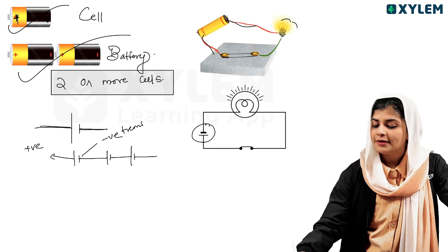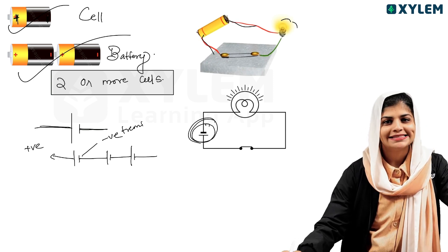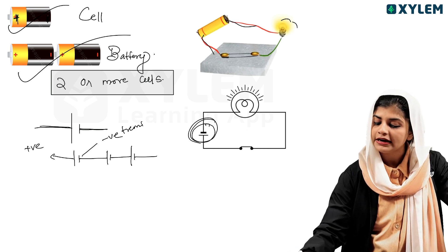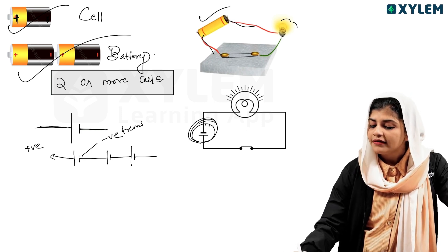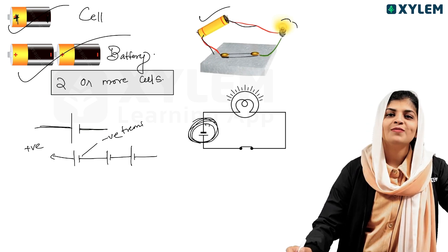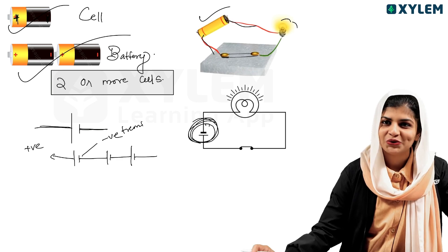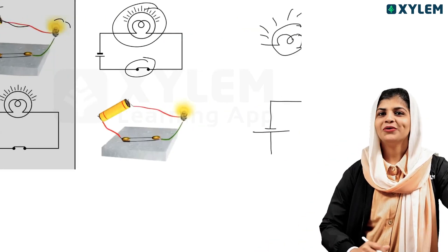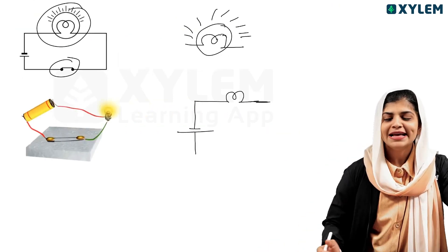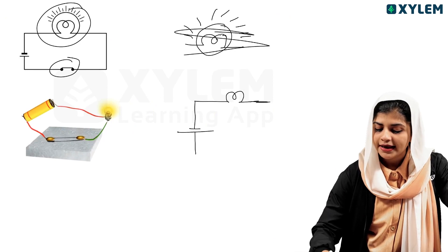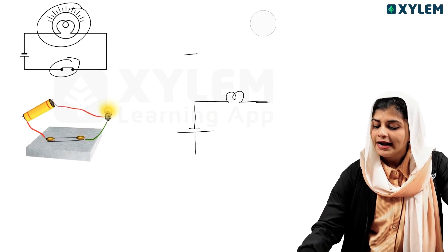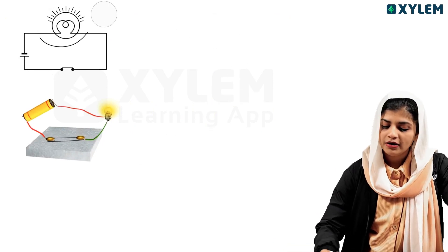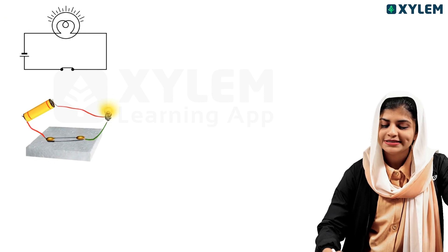For a cell we have one set of lines. For a battery, we have two sets of lines representing positive and negative terminals. That is how we distinguish between a cell and a battery in diagrams.